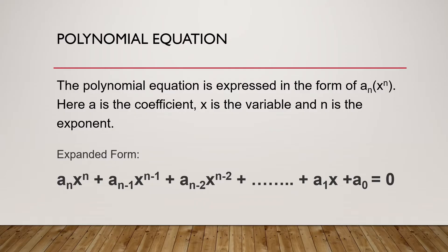In expanded form, we have a sub n times x raised to n, plus a sub n minus 1 times x raised to n minus 1, plus a sub n minus 2 times x raised to n minus 2, plus a sub 1 times x, plus a sub 0 equals 0.